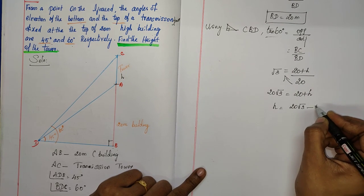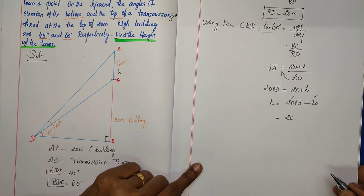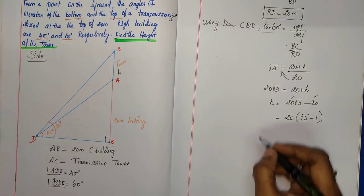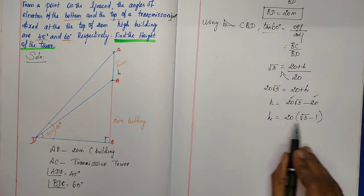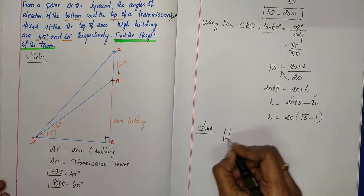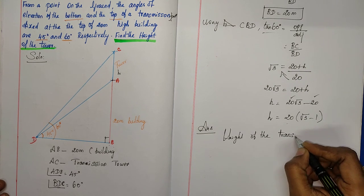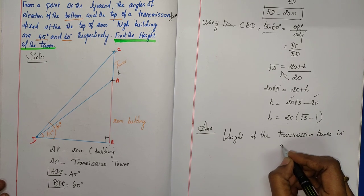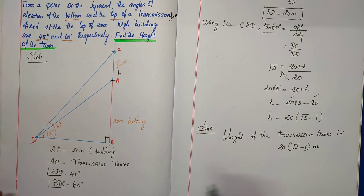From 20√3 = 20 + h, we get h = 20√3 − 20. Taking 20 as common: h = 20(√3 − 1). Therefore the height of the transmission tower AC is 20(√3 − 1) meters. This is the answer for Question Number 7.